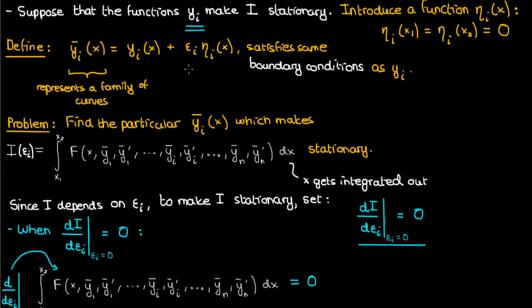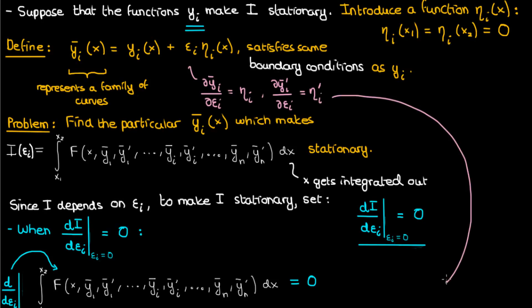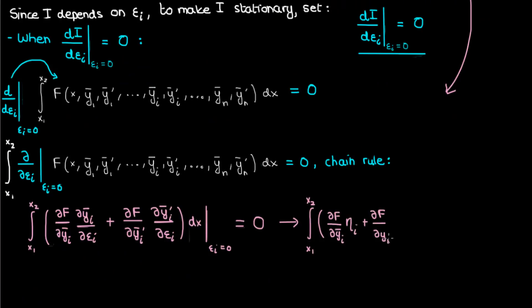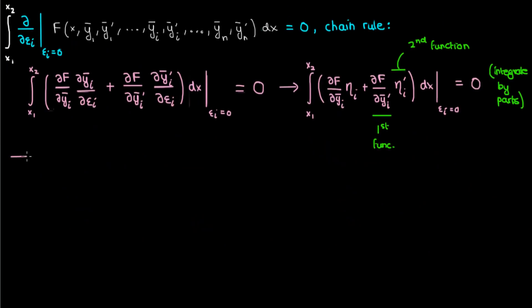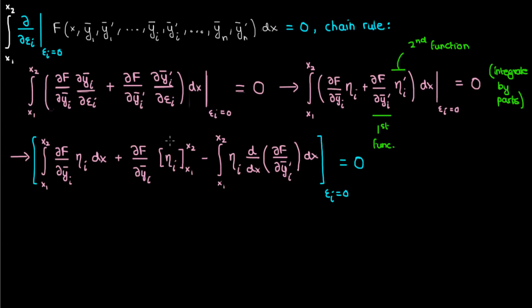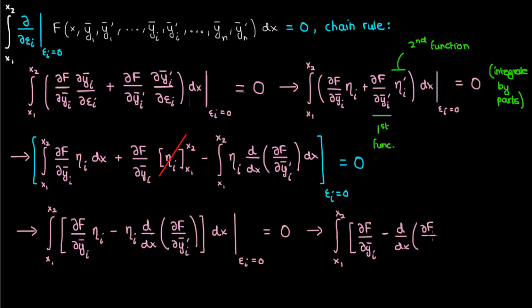The partial derivatives of x and all the other y bars with respect to epsilon_i are zero, which is why they don't appear. Going back to the expression for yi bar, its partial derivative with respect to epsilon_i is eta_i, and the partial derivative of yi bar prime is eta_i prime. Substituting these back, we take the second term in the integral and integrate it by parts. When you perform integration by parts with eta_i prime as your second function and partial F / partial yi bar prime as your first function, and apply the boundary conditions — which force eta_i to zero at x1 and x2 — the boundary term cancels, leaving a factored expression with eta_i in common.